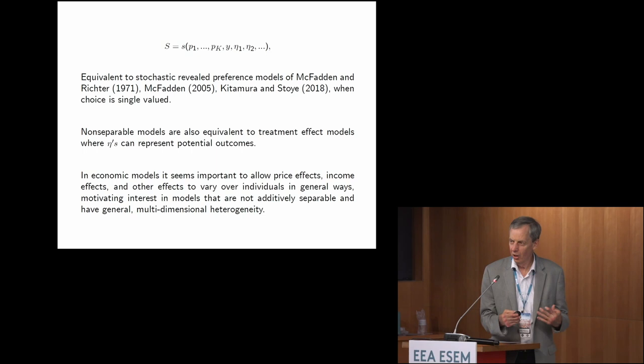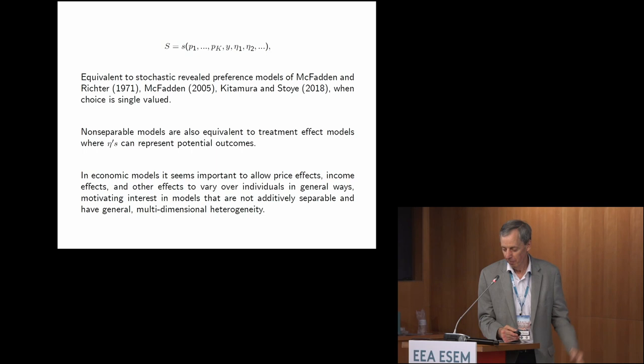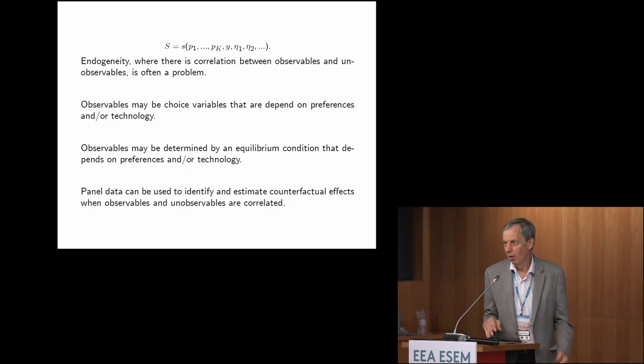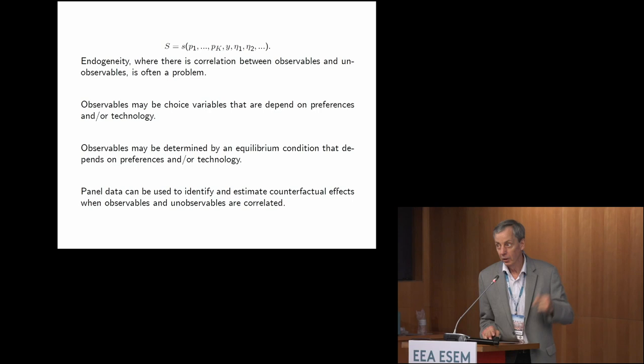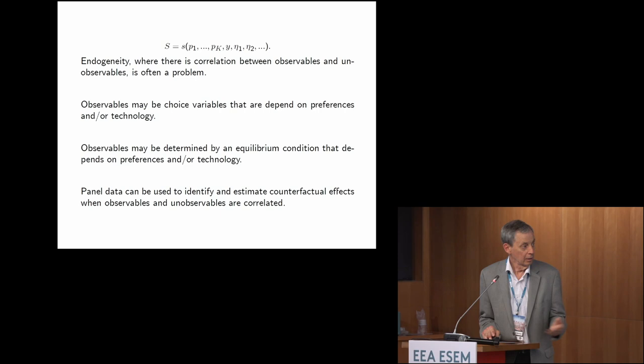That motivates interest in models that are not additively separable and have general multidimensional heterogeneity — that's the starting point. An important problem in economics is endogeneity: correlation between observed variables and unobservables like preferences or technology. Panel data can help control for that endogeneity; it can be used to identify and estimate counterfactual effects when observables and unobservables are correlated.